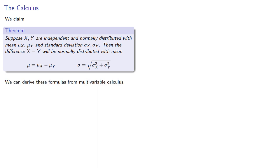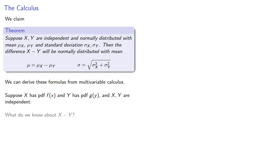Suppose X has PDF f and Y has PDF g, and X and Y are independent. What do we know about the difference X minus Y? First, let's find the expected value.